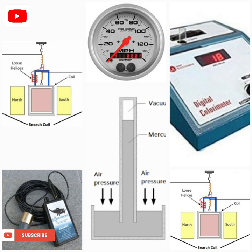Sonar is used to detect objects underwater. The spectroscope is used to observe or record spectra. The stroboscope is used to view rapidly moving objects.